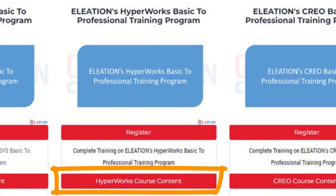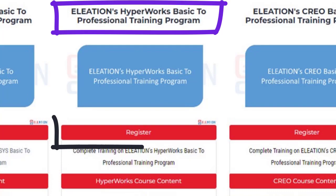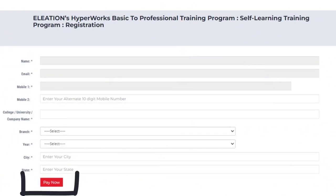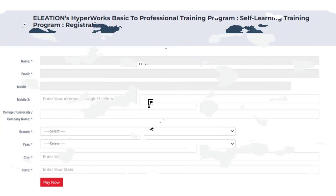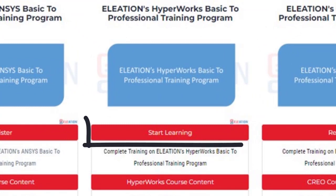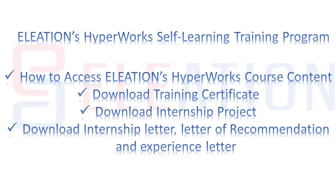If you are a new user, enter your name, email ID, mobile number, password, and confirm password, then click Submit. Click on the Hyperwork Course Content button to view all topics covered in the program. Under Eliation's Hyperwork Basic to Professional Training Program, click on Register. On the registration page, enter the required details, click Pay Now, select the mode of payment, and complete the payment process. Once payment is complete, you will find the Start Learning button.